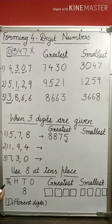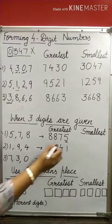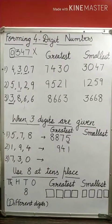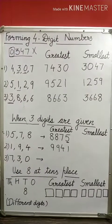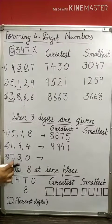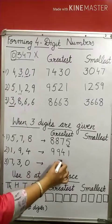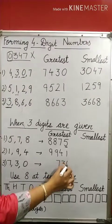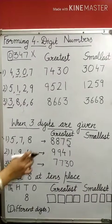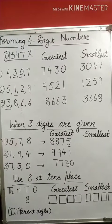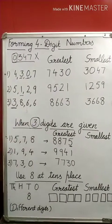Let's take another example: 1, 9, 4. Arranged in descending order: 9, 4, 1. Which digit am I going to repeat? 9. So the greatest 4-digit number is 9941. Next example: 7, 3, 0 — already in descending order. We will repeat 7 again, giving 7730. This is the way of framing the greatest 4-digit number when you are given with only 3 digits.